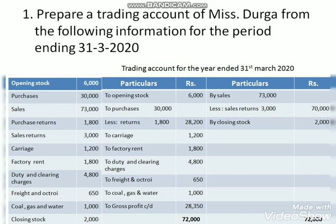Solution: Opening stock is on the debit side. Purchases, less purchase returns, are shown on the debit side — purchases 30,000 less purchase returns 1,800 gives net purchases 28,200. Sales are on the credit side at 73,000, less sales returns 3,000, giving net sales 70,000. Carriage 1,200, factory rent 1,800, duty and clearing charges 4,800, freight and octroi 650, coal gas and water 1,000 are all on the debit side. Closing stock 2,000 is on the credit side.